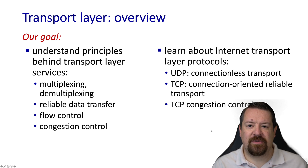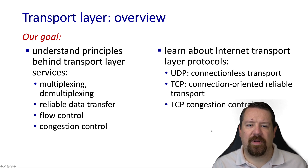In the previous chapter, we looked at how applications request service from the network, but glossed over a lot of the details of how that service is provided. While there have been many different transport protocols over time, there are two that are far more common than any others: UDP and TCP.